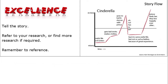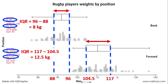For excellence, we want to find a story to understand why the weights of our forwards are a little more spread out than the backs. So that's what we're trying to explain: why is there more variation in the forwards' weights?